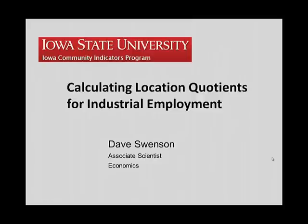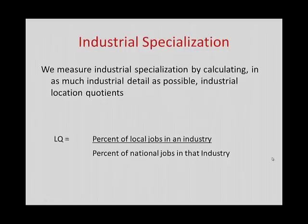In this session, we're going to learn how to calculate location quotients to give us an idea of industrial employment specialization in your region of analysis. What we mean by industrial specialization is that we have an area or part of your economy that is more competitive just by virtue of employment than would be the national average. Iowa, for example, has a competitive advantage in farming.